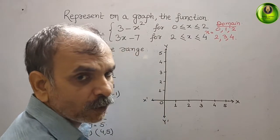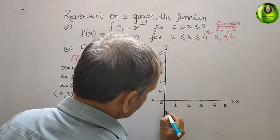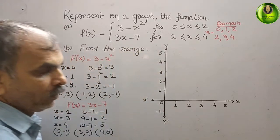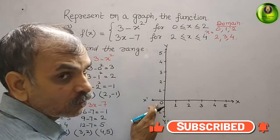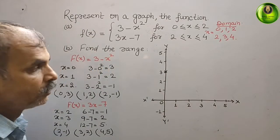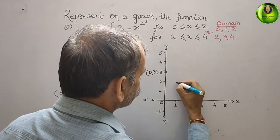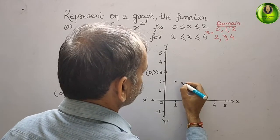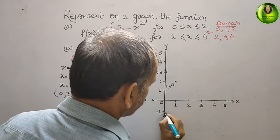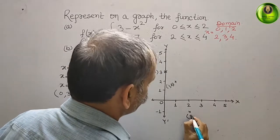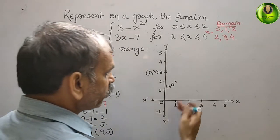Now plotting one by one. First, (0, 3): x = 0 and y = 3, so the point is here. Second, (1, 2): x = 1 and y = 2, it comes here. Third, (2, −1): x = 2 is here and minus 1 is here, so the point comes here. These are the points for the first function, so we join them and it comes out like this.